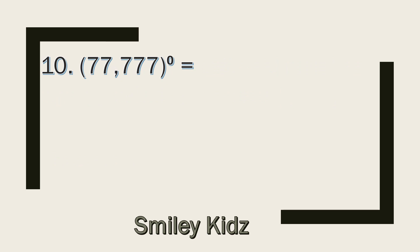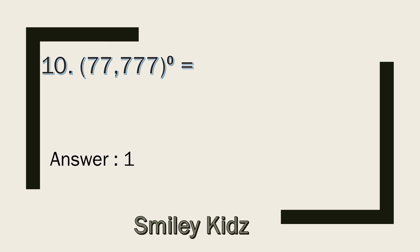Question number 10. 77,777 to the power of zero is equal to 1.